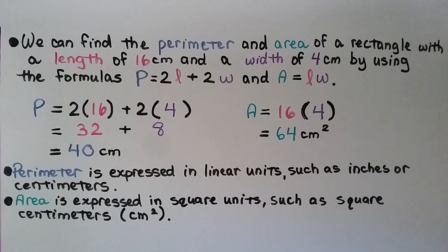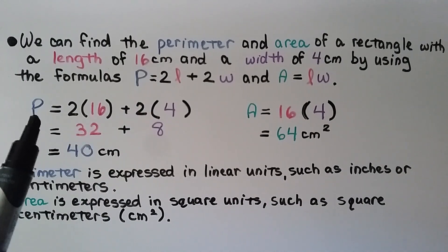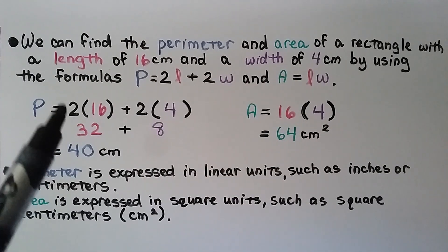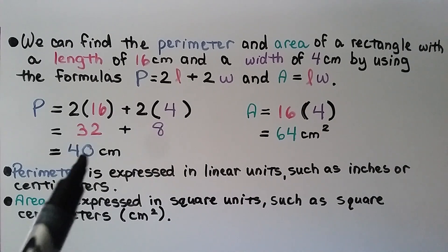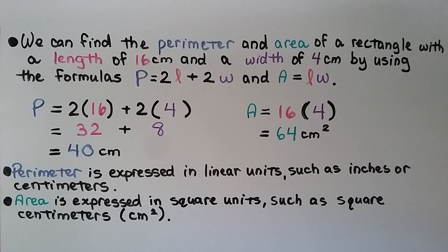We can find the perimeter and area of a rectangle with a length of 16 centimeters and a width of 4 centimeters using the formulas. Perimeter equals 2 times the length plus 2 times the width: 2 times 16 is 32, and 2 times 4 is 8 — that gives us 40 centimeters. For area, 16 times 4 is 64 centimeters squared. Perimeter is expressed in linear units such as centimeters, and area is expressed in square units such as centimeters squared.